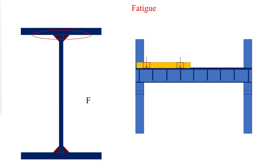Each wheel load passage may occur 2 or 4 times with each passage of the crane. The calculation of such highly localized tensile bending stresses is so complex and unreliable that the problem is addressed through conservative detail requirements. To reduce the likelihood of such cracks, AIST TR-13 recommends that the top flange to web joint be a CJP weld with fillet reinforcement.